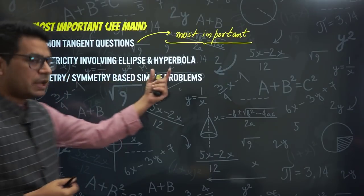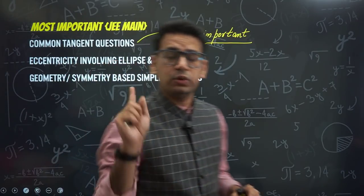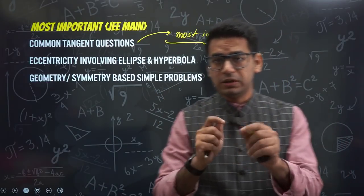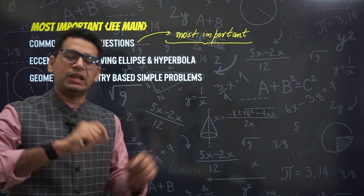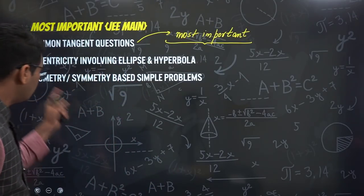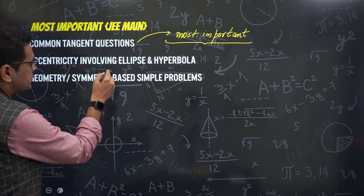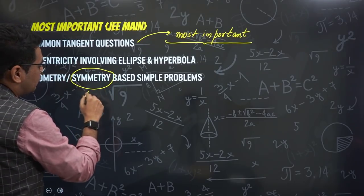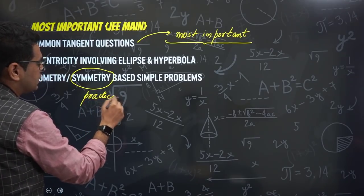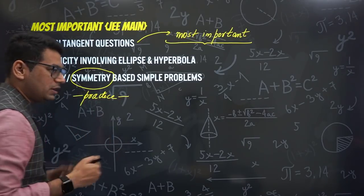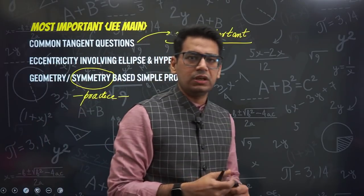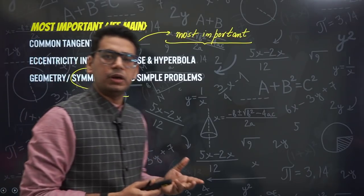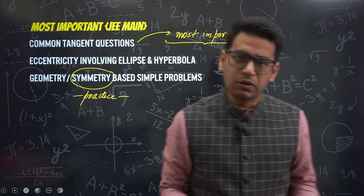Eccentricity questions involving ellipse and hyperbola — if an easy lottery question comes, this type of question will definitely appear. Questions where the foci of ellipse and hyperbola are the same — this type of question is common. The second important area is symmetry. Conic sections is all about symmetry, so wherever you get symmetry-based questions in practice, please do them properly and understand them, because many things get solved on the basis of symmetry from JEE Mains' point of view. These three things are what are important in these particular chapters.